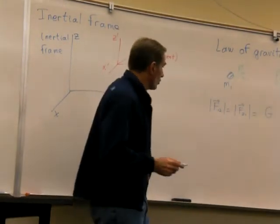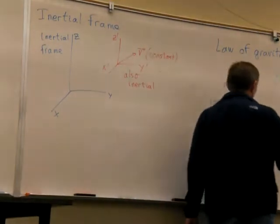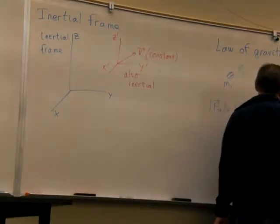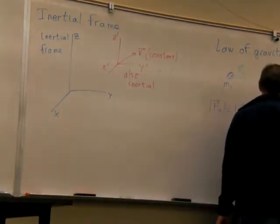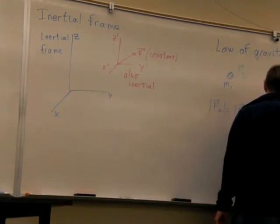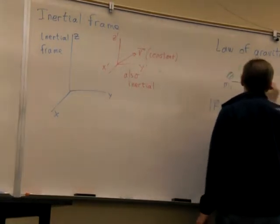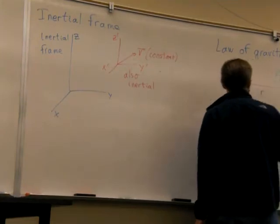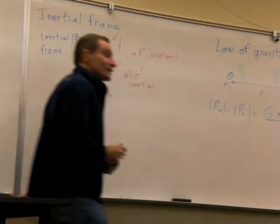The constant of gravitation, m1 m2 divided by r squared, where r is the distance between the masses.